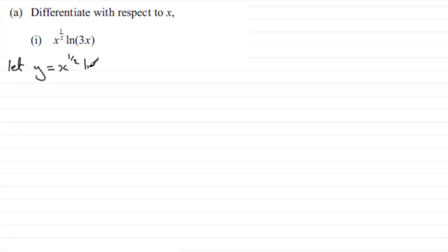Now what we've got here is a product of two functions of x. x to the power half is one of the functions of x, and the natural log of 3x is being the other function of x.